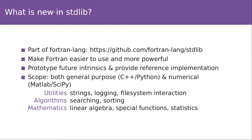The main goal is at a high level to be bridging the gap between what's offered intrinsically in the language versus the kinds of high-level code that you'd like to be writing in applications. The scope is everywhere from general purpose programming, like what you'll find in the C++ standard library or Python or Java standard libraries, spanning all the way to having a nice base of numerically oriented functionality, like what you get out of the box with MATLAB or the Python scientific ecosystem. This includes everything from string handling, logging, file system interaction, searching, sorting, but also linear algebra, special functions, and statistics.